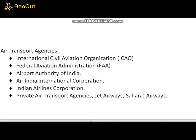Starting with the most important agency globally controlling civil aviation — the International Civil Aviation Organization (ICAO) — it was established in 1944 as a result of the Chicago Convention, with its headquarters in Montreal, Canada. The organization is made up of three constituent parts: an Assembly, a Council of limited membership with various subordinate bodies, and a Secretariat.